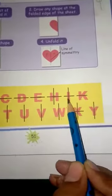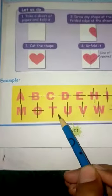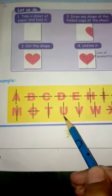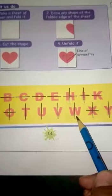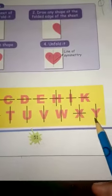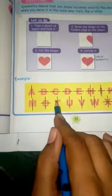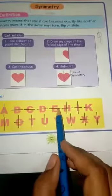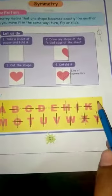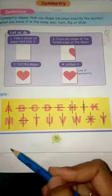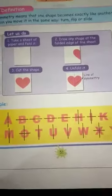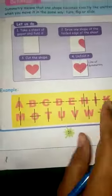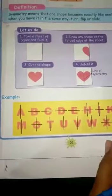The symmetric alphabet letters are: H, I, K, M, O, T, U, V, W, X, Y. These letters are symmetric. F, G, J are not symmetric alphabetical letters — they are not symmetric.